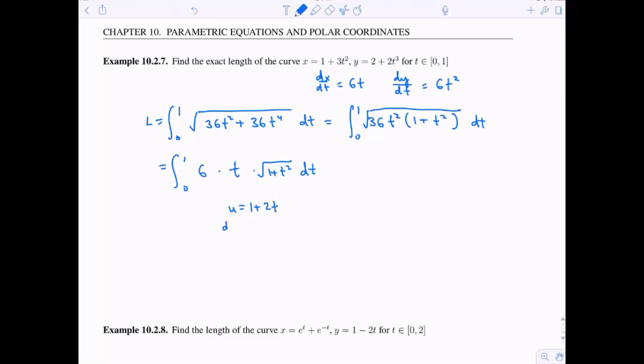But luckily, now we can integrate this with some u substitution. u should be equal to 1 plus t squared. Du is equal to 2t dt. That's the derivative. And of course, we can solve this t dt is equal to du over 2. So we can see I have a t dt to trade in.